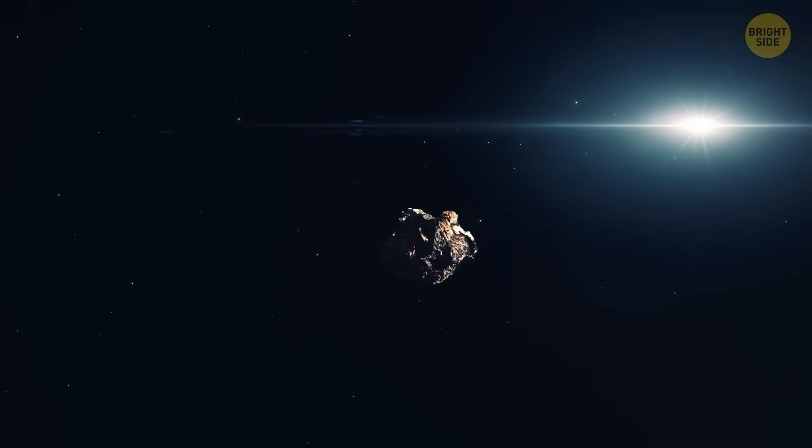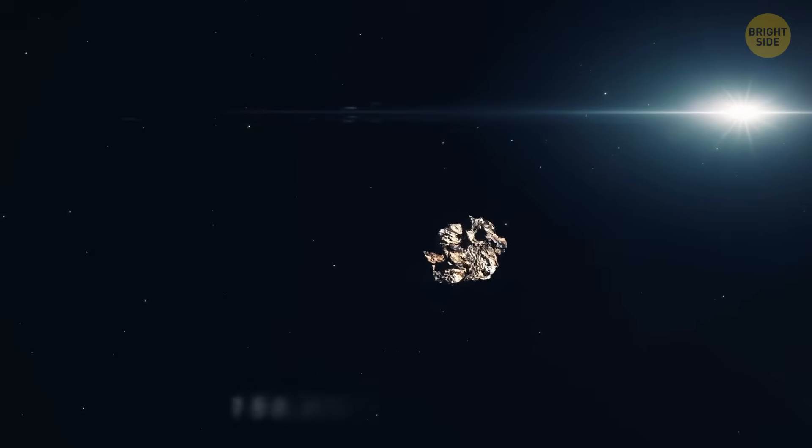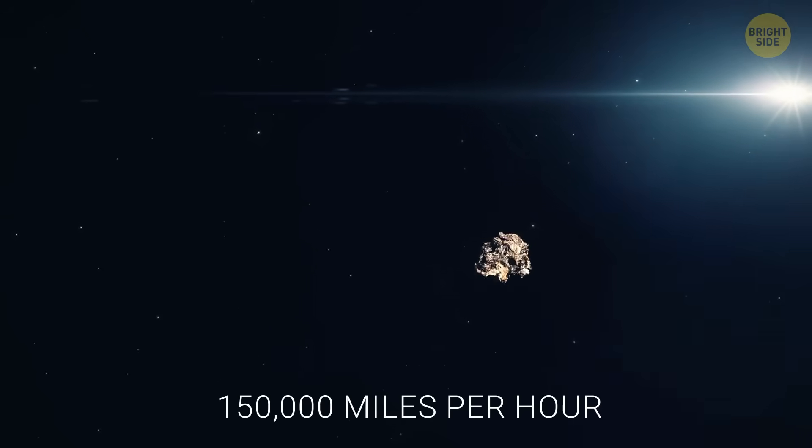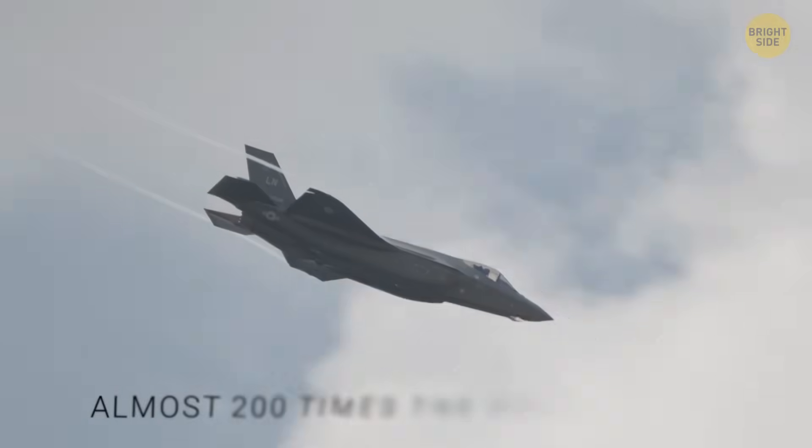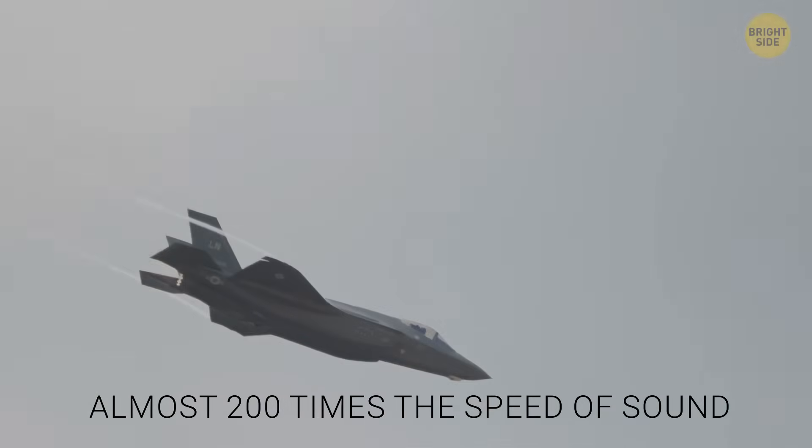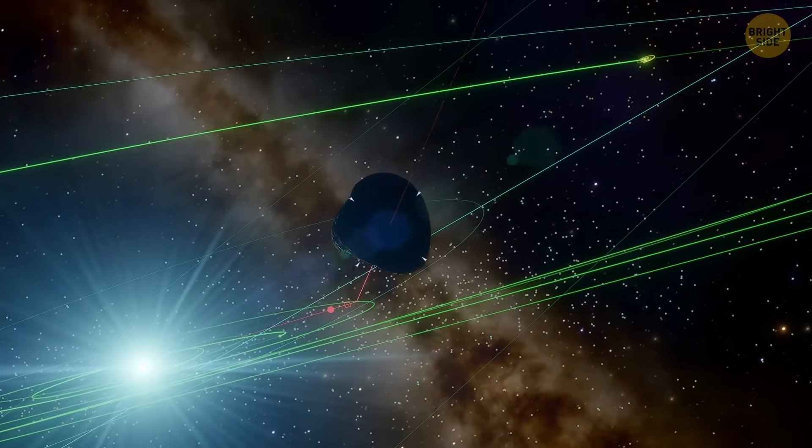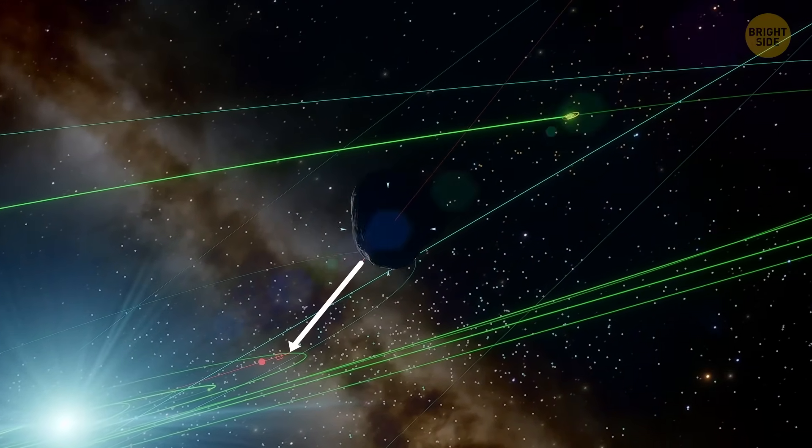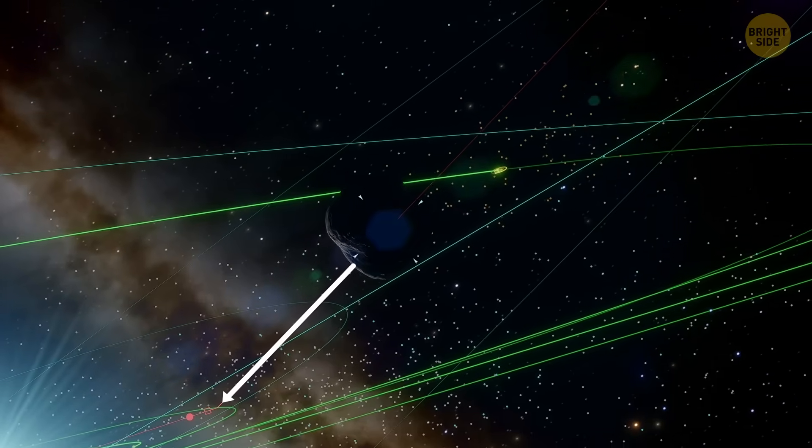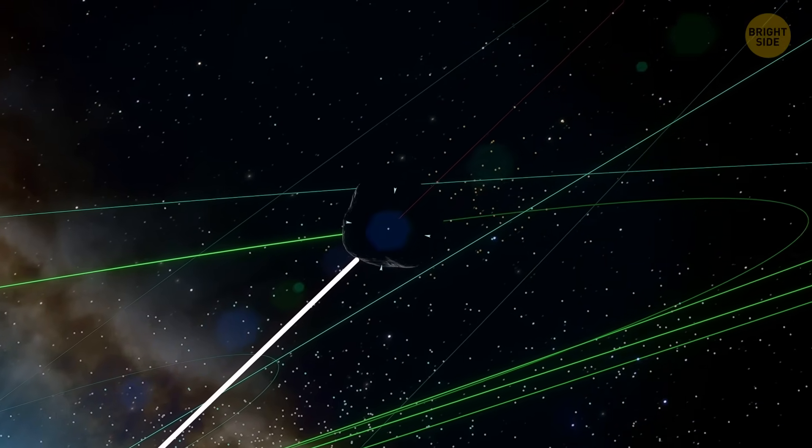It's also traveling incredibly fast, about 150,000 miles per hour, which is almost 200 times the speed of sound. And unlike objects in our solar system, which follow curved paths because of gravity, 3I Atlas is moving on a nearly straight line. That alone makes it stand out.